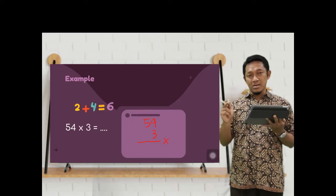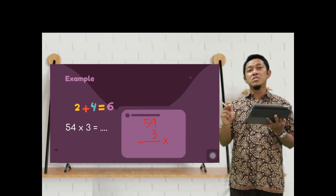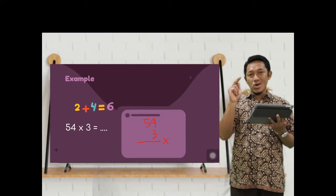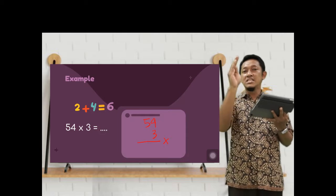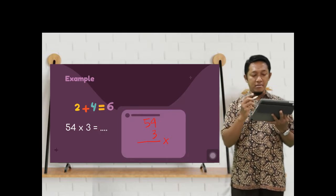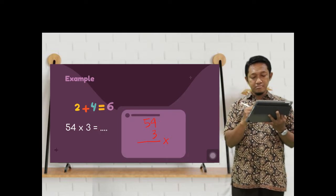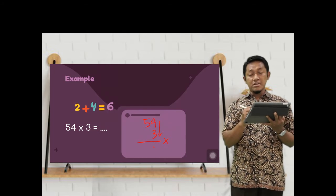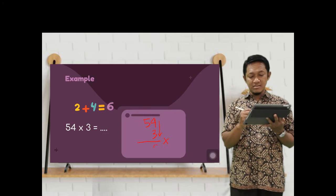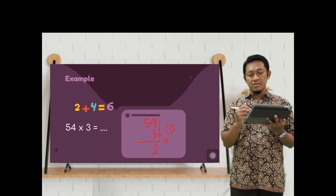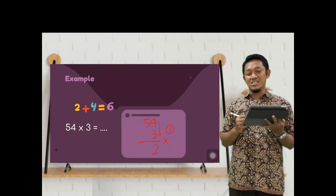Remember, when we want to multiply the number, we start from the ones. From the ones first, or from the last digit, the back number. 4 times 3 is 12. 12. So we save the 1.